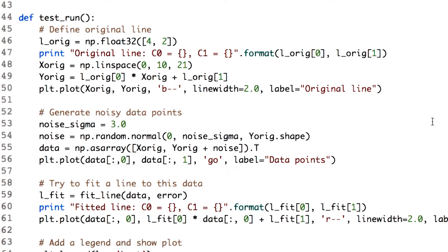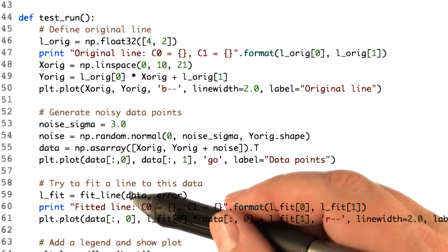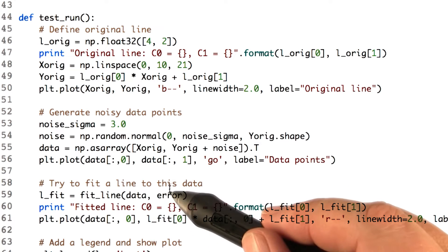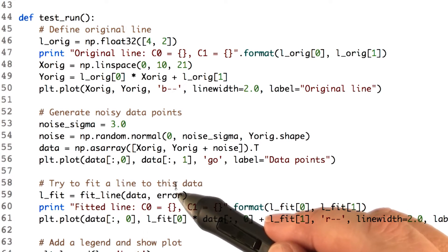And we're going to challenge our minimizer to find the equation for that original line even though there's noise. We wrote a separate function fit line that takes the data and the error function we defined, and finds the equation for that line.